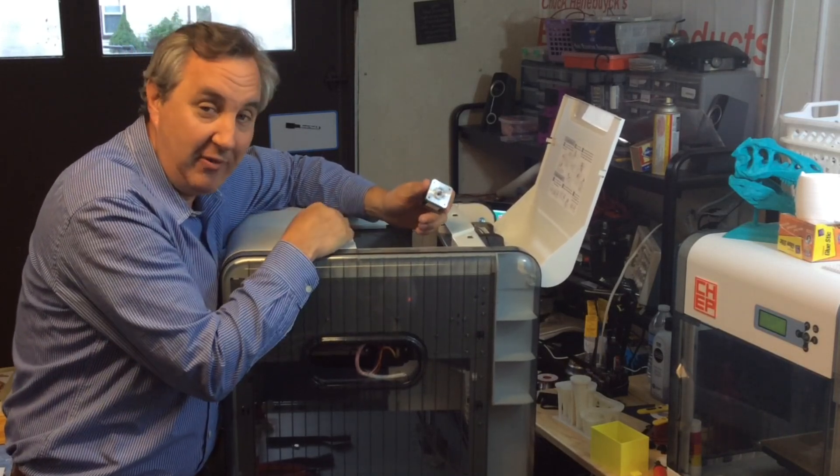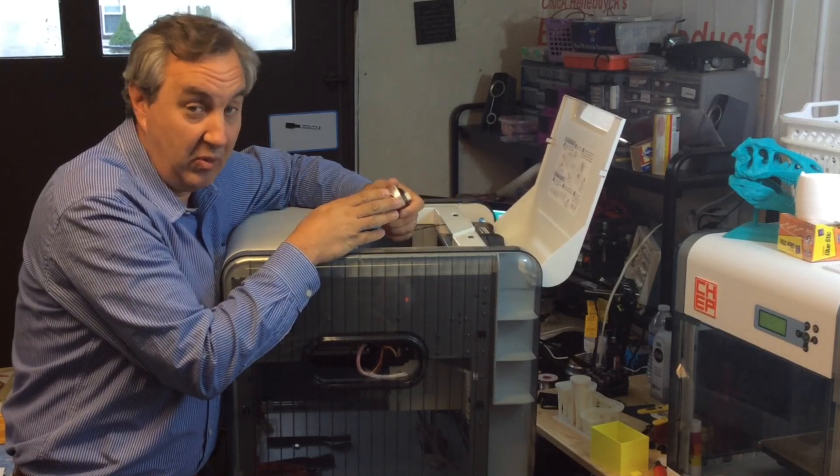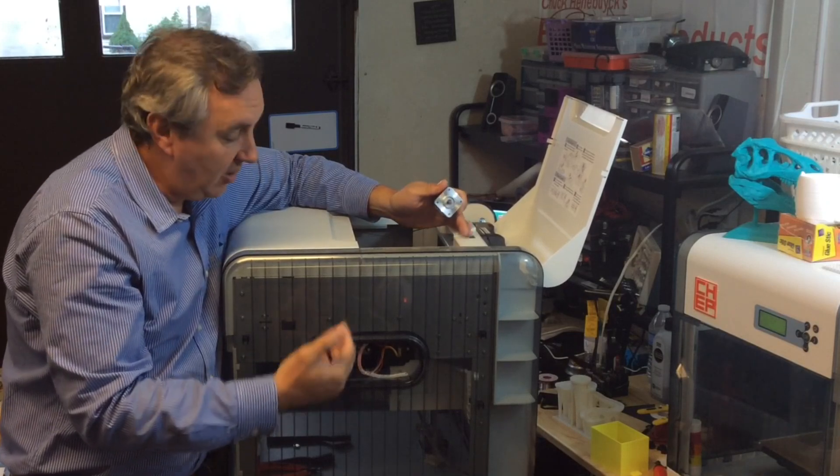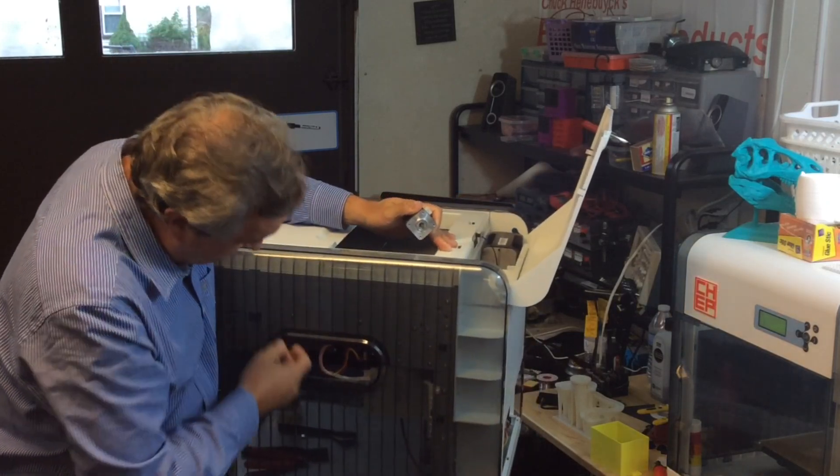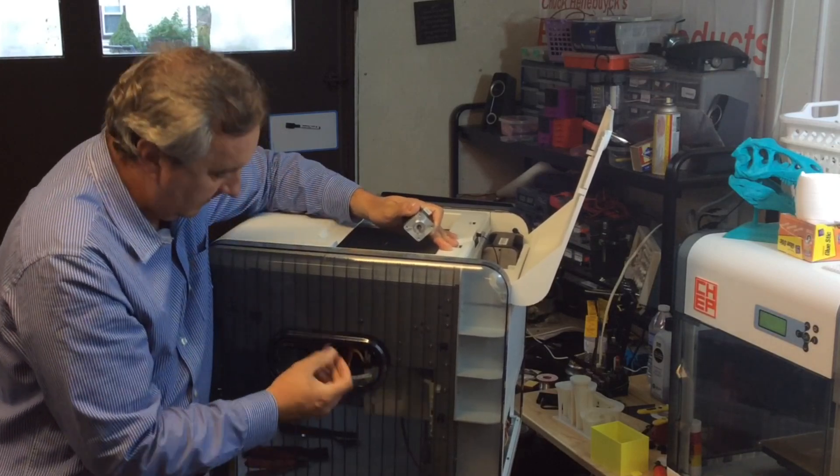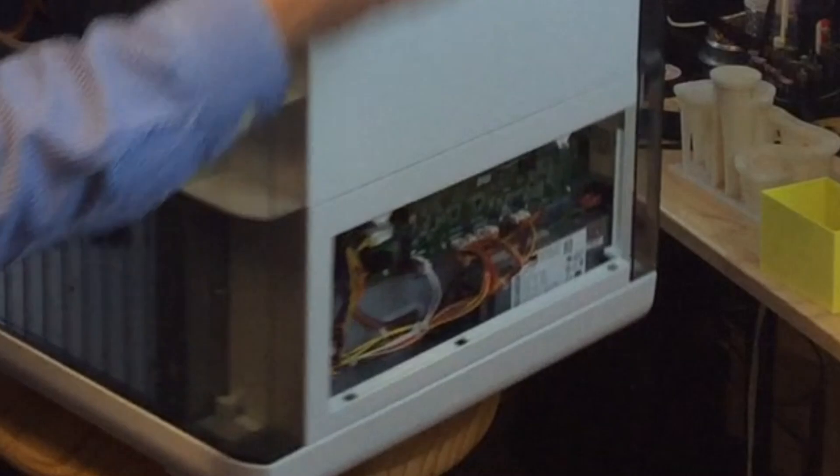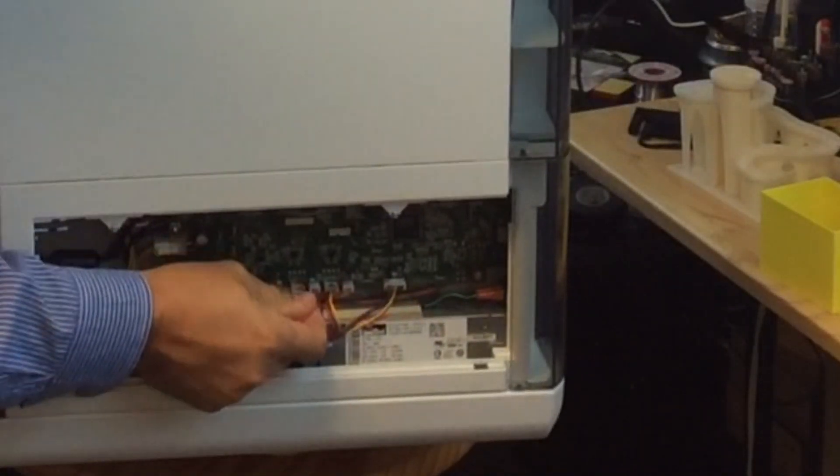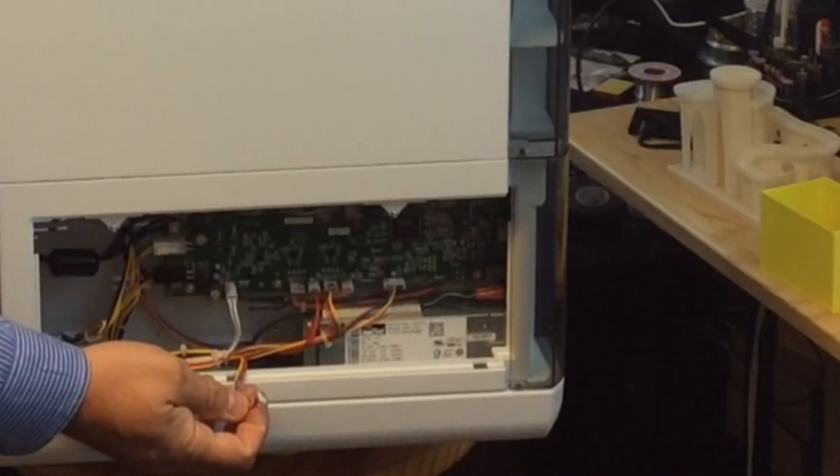The motor ran fine. No hesitation, nothing. So that told me the motor was good. So it came down to the only thing left was something in the harness. So next what I did is I disconnected the motor. So I had the connector here and then I disconnected the harness from the board down here. And then I did a continuity check between the two.